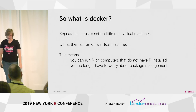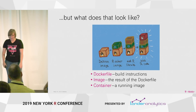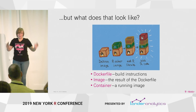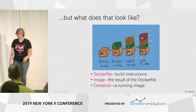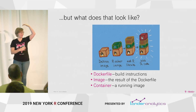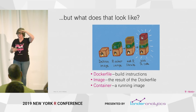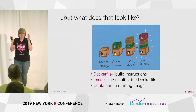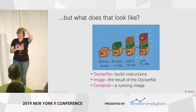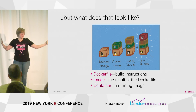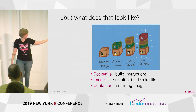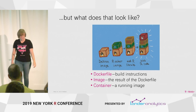So what does that look like? We have a Dockerfile — that's just the list of instructions used to set up your computer at any time. You have the image, which is after somebody builds that Dockerfile and sets up the computer like you asked. And when you run it, that's the container. People will throw these words at you a lot, but they're all really the same things, just in different forms of the process.